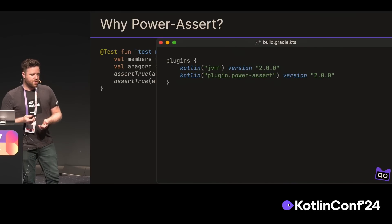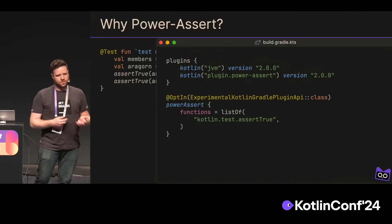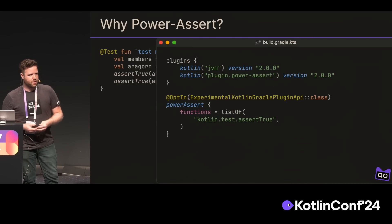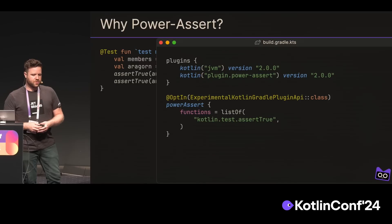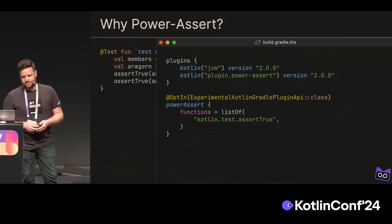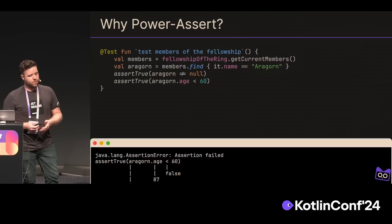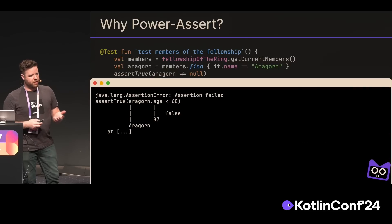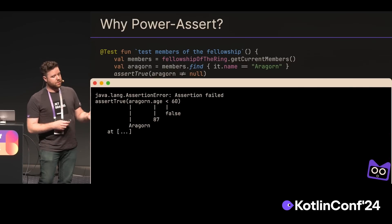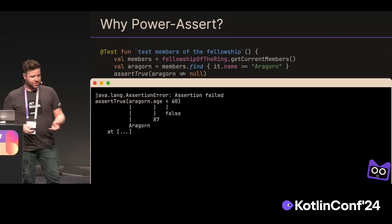To support this, we can configure the PowerAssert plugin and tell it what functions we want it to transform. By default, if you don't define anything, it will only transform the assert function. But here we are going to provide assert true. And when we do that, we'll get that same error message style for assert true as well — learning here that Erdogan is 87 years old.